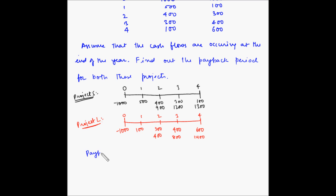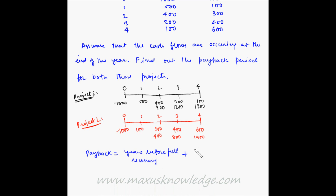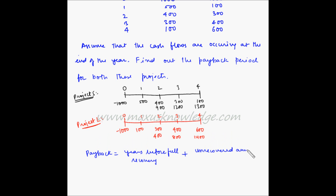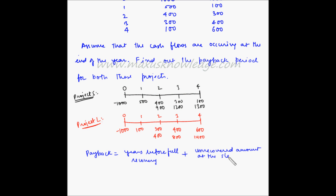We know the formula for payback of an uneven cash flow — because both S and L have uneven cash flows — so payback is equal to years before full recovery plus unrecovered amount at the start of the period divided by cash flow during the period.